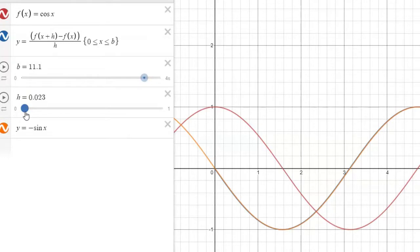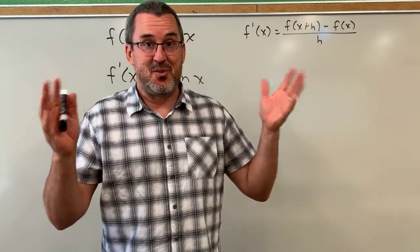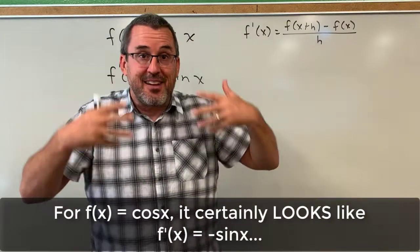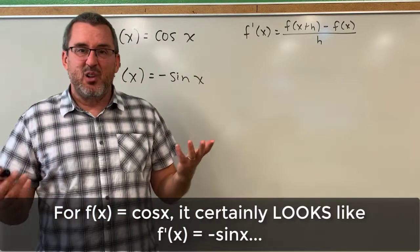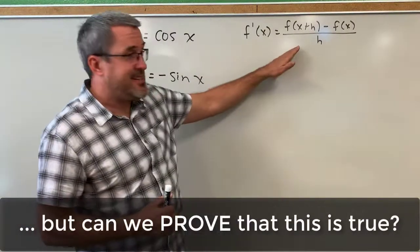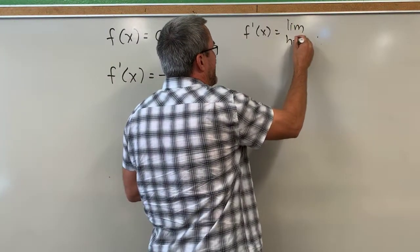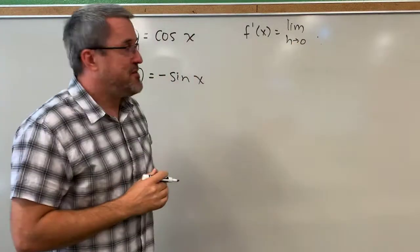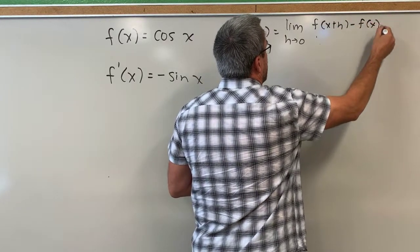So what we'll do now is approach it from a more formal symbolic approach and confirm what we expect: that the derivative of cosine of x is negative sine of x. From your work with Desmos you saw that graphically the derivative of cosine of x looks like it should come out to be negative sine of x. But let's now look at it from a more formal perspective and go back to the limit definition of derivative to find out if this is really true.